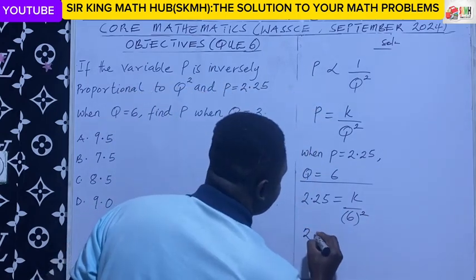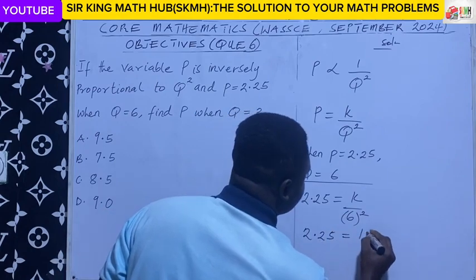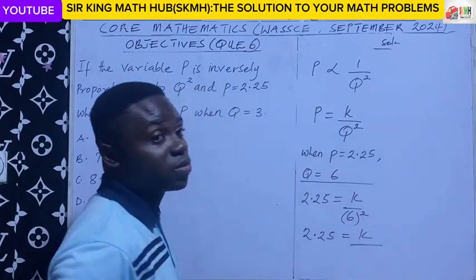Then we have 2.25 is equal to k o. You know that 6 squared is 36.